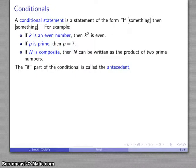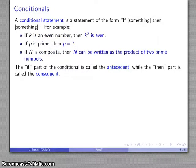The if portion of the conditional is the antecedent. The then part is called the consequent. So here, k squared is even, p is 7, N can be written as the product of two prime numbers. Those are all the consequents of the conditional.